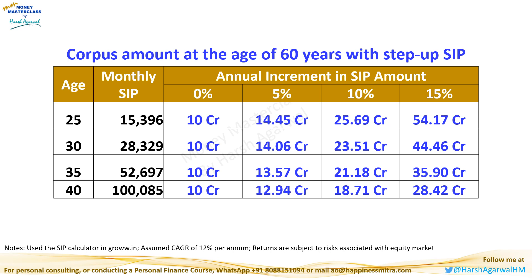Even if you can't increase the SIP amount every year, or by the same percentage every year, it's absolutely fine. Increase the SIP amount whenever you can afford to do so, to the extent you can afford — even if it's intermittent for some months or years in between. Any such incremental investment will raise your end corpus.